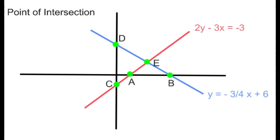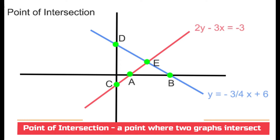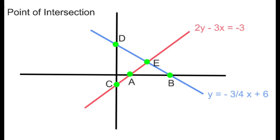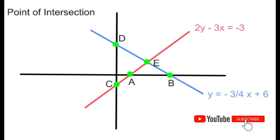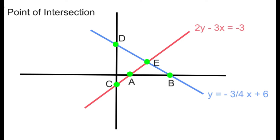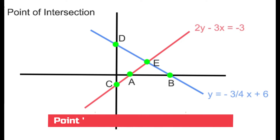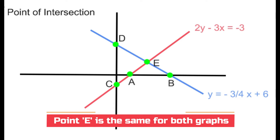Let us talk about point of intersection. As the name signifies, it is a point at which two lines intersect. In the diagram on your screen, E is the point of intersection — you can see that the red line and the blue line cross each other at E. One very important thing about the point of intersection is that at that specific point, both lines have equal coordinates: the X and Y at E is the same for both the blue line and the red line.